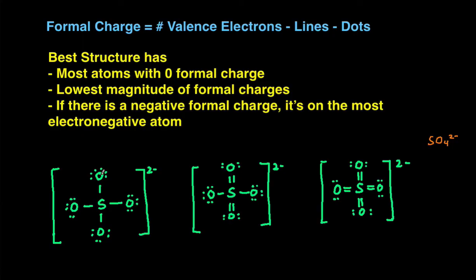So let's start by calculating the formal charge of each of the atoms. We'll start with this oxygen here. The oxygen has six valence electrons minus the number of lines, which is one, minus the number of dots around it, which is six, giving us a formal charge of negative one.